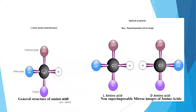Here you can see the structure of amino acids. In this figure, both functional groups — the carboxylic group as well as the amino group — are attached to the same carbon atom, known as the alpha carbon. L amino acids and D amino acids are a sort of mirror image of each other. In the L amino acid, the amino group is on the left side, whereas in the D amino acid, it is on the right side.